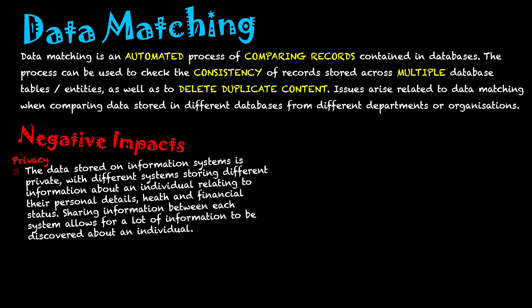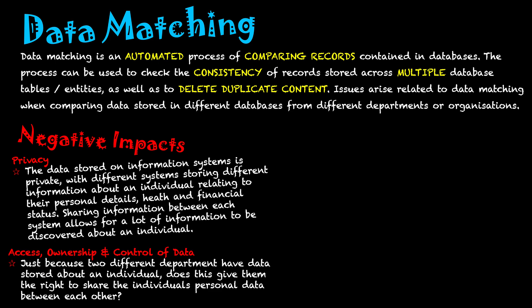The second area is access, ownership, and control of data. Just because two different departments have data stored about an individual, does this give them the right to share that personal data between each other? They can access and use that data for their day-to-day work, but they don't own that data and shouldn't have the ability to give it to another department. Even though this is an automated process, the records are still being shared between the two different database systems.